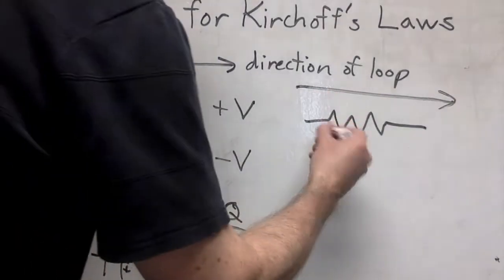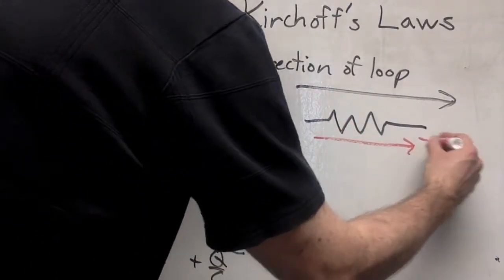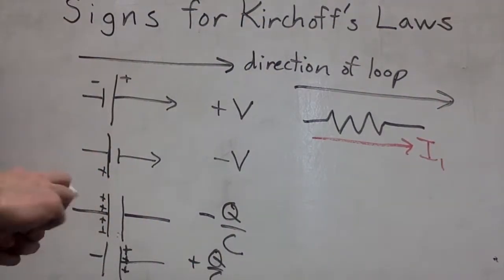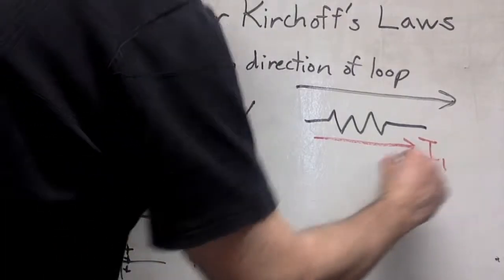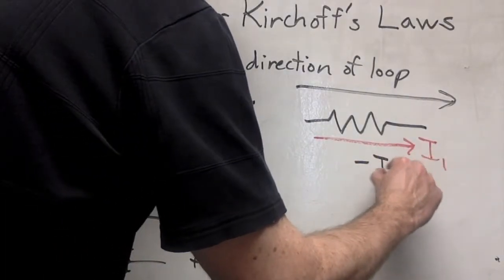If the current direction you chose is going to the right, and you're going to the right around the loop, that is minus IR.